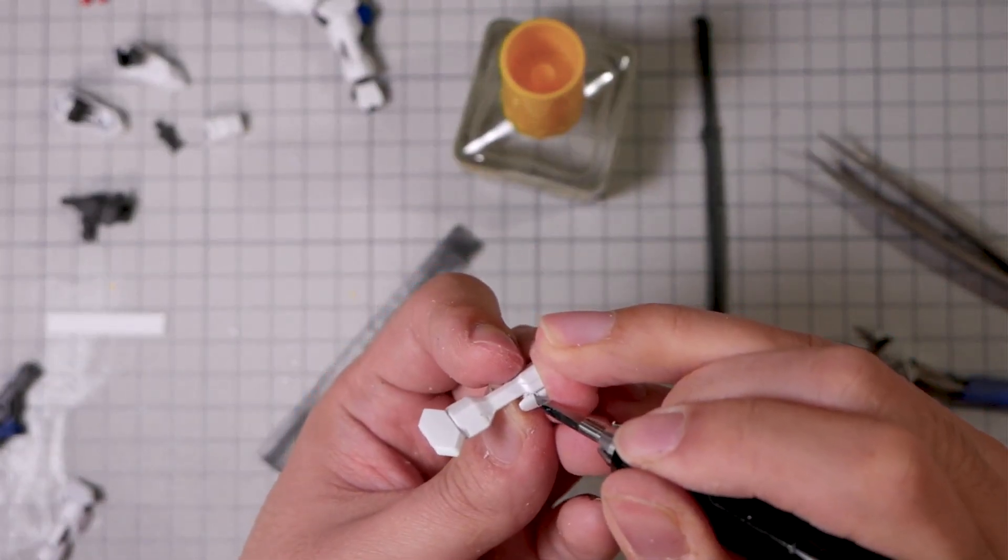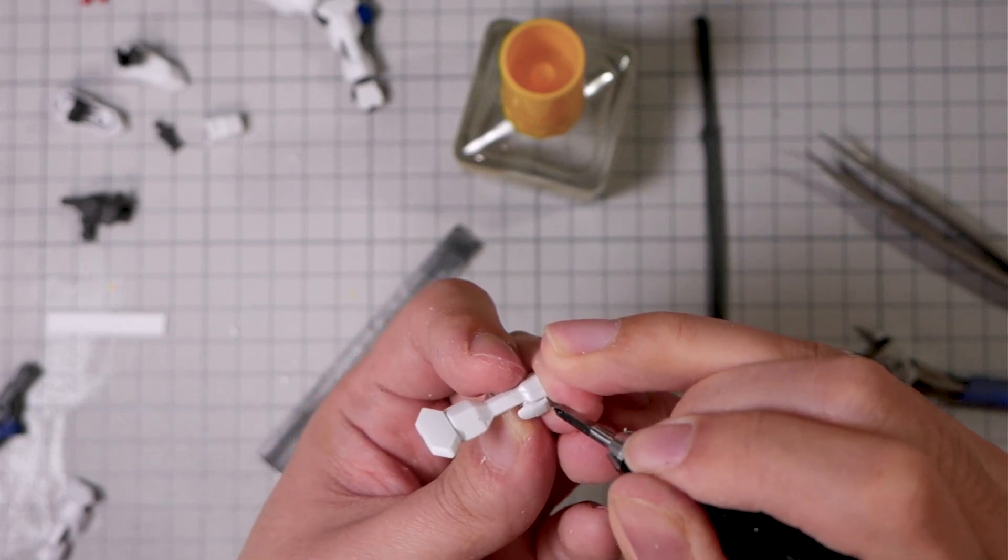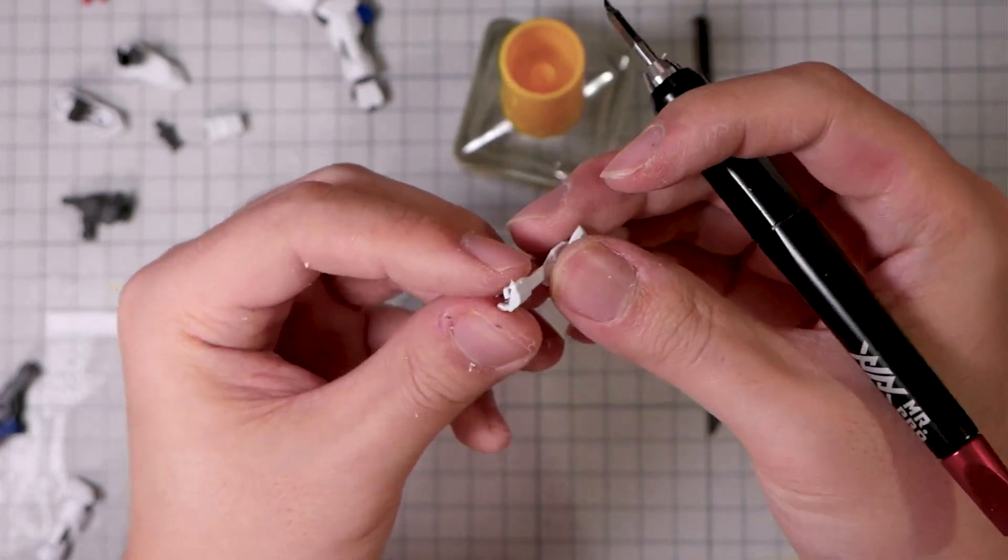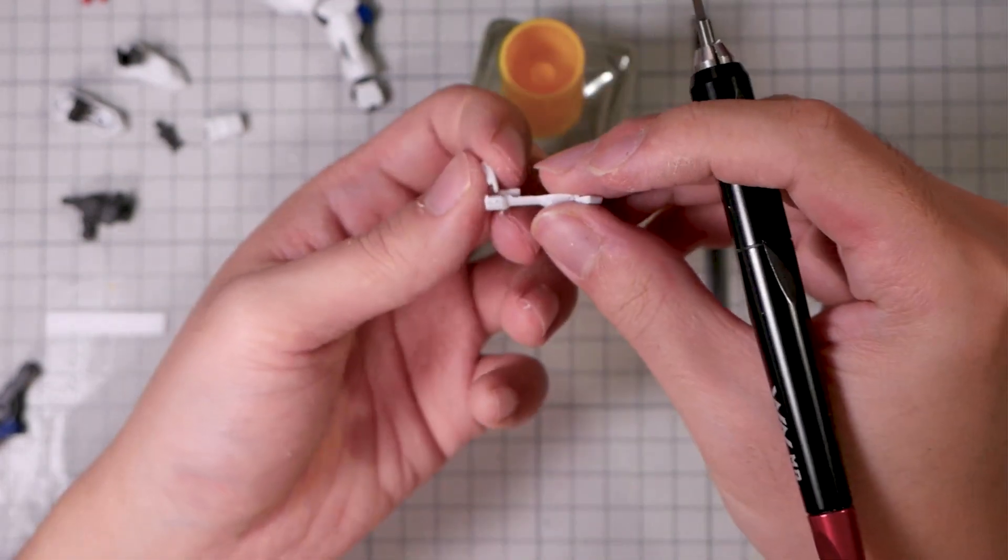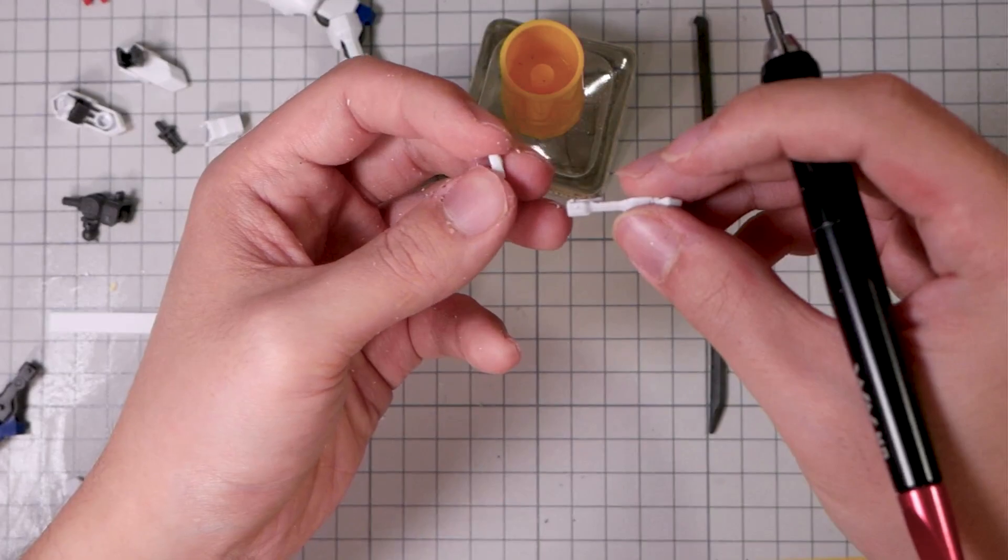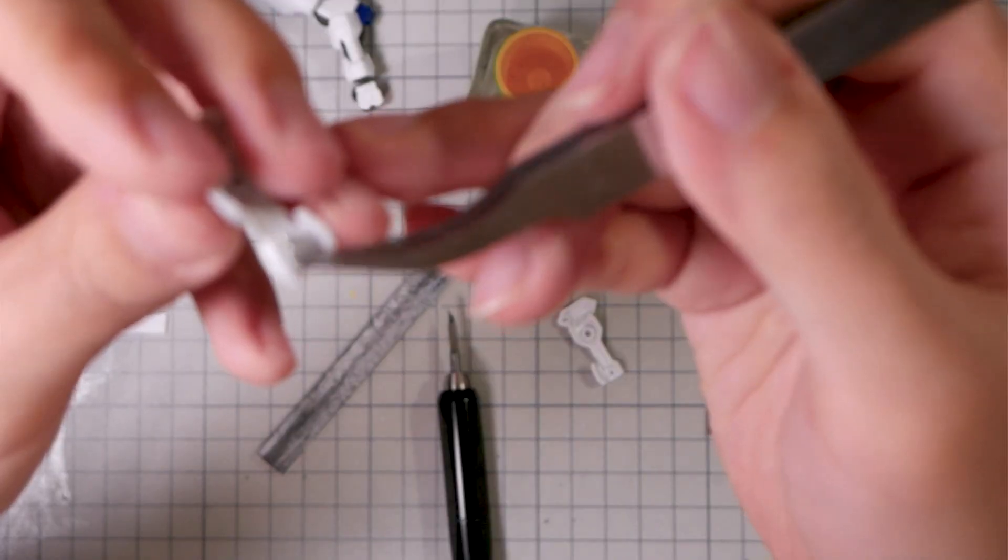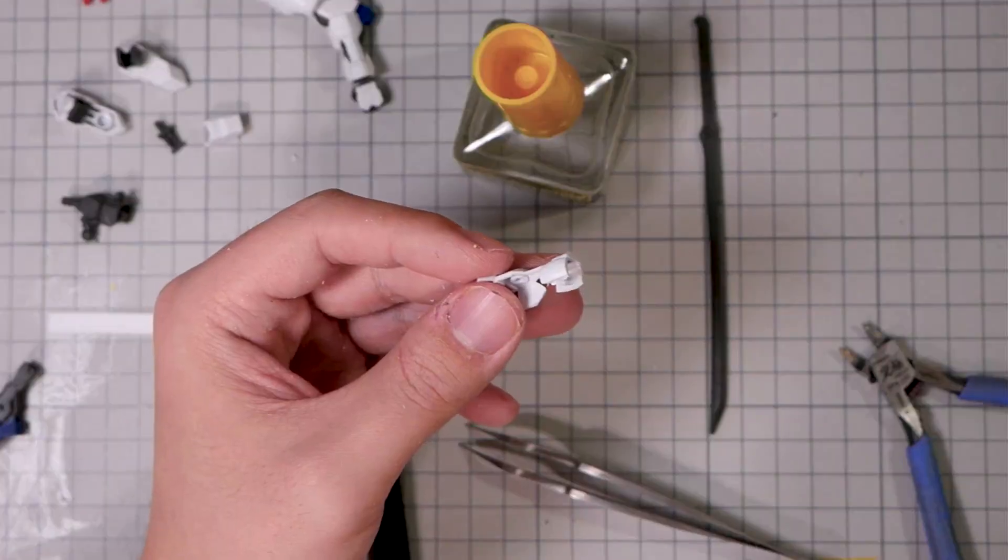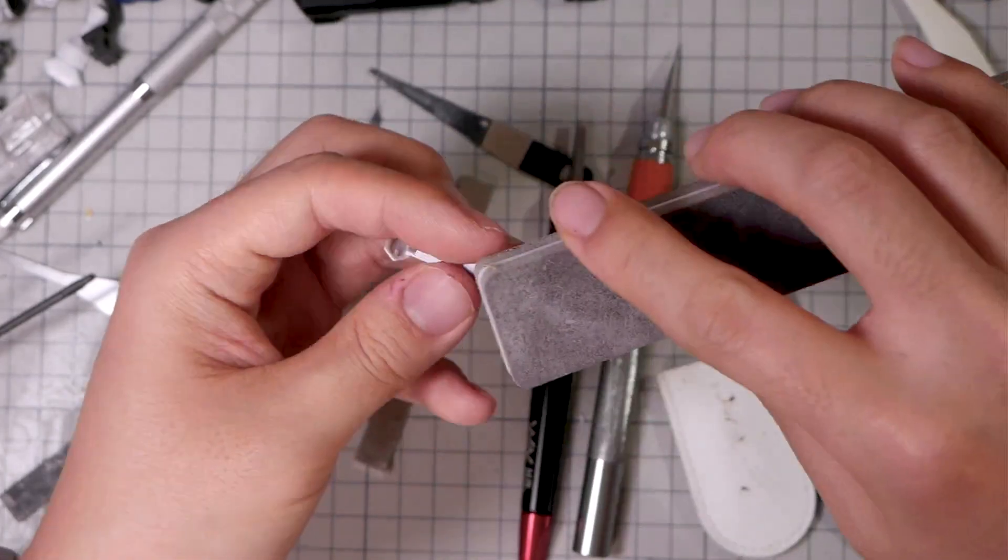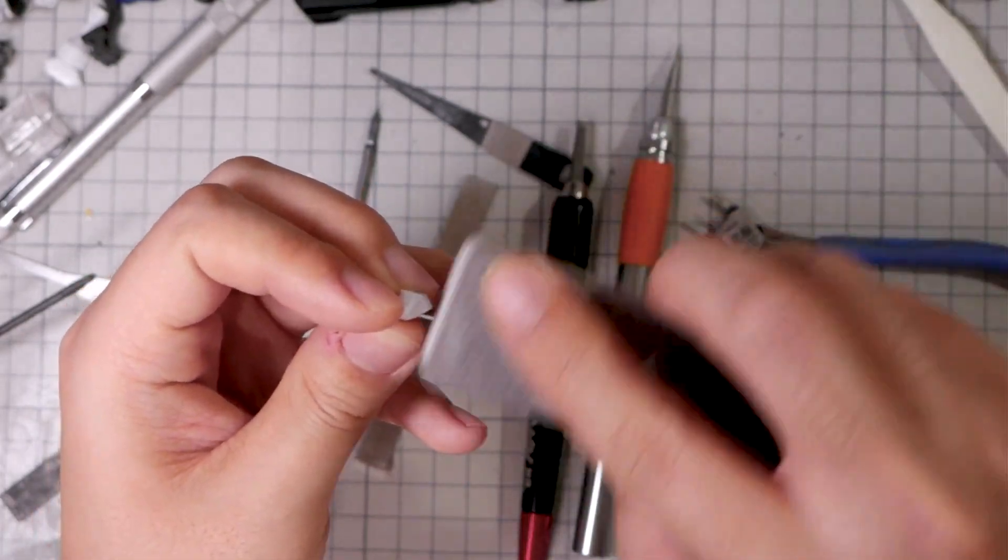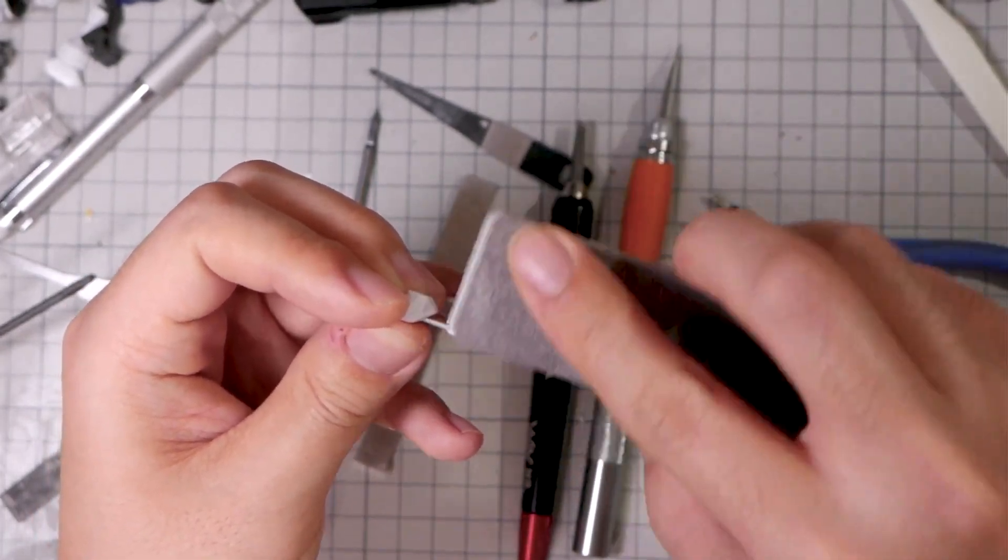We'll first take a thin chisel, in my case a 0.15 millimeter one, and score the border until the part is almost coming off. Eventually the part will come off with very little force. Now with a little bit of plastic cement, we'll glue this onto the other side. Wait till the glue sets, and now we can get to sanding. This is a nice and easy curved surface, so a sanding sponge will do the job just fine.